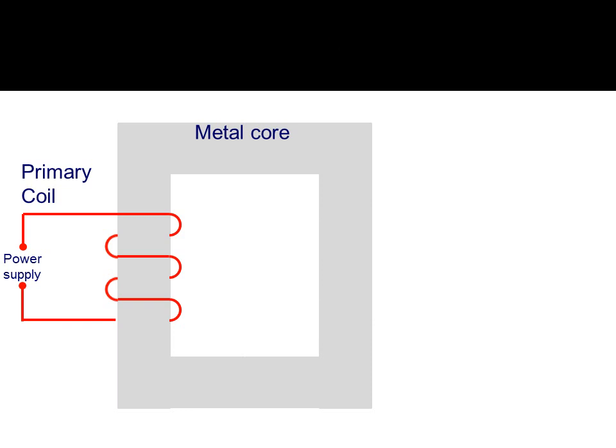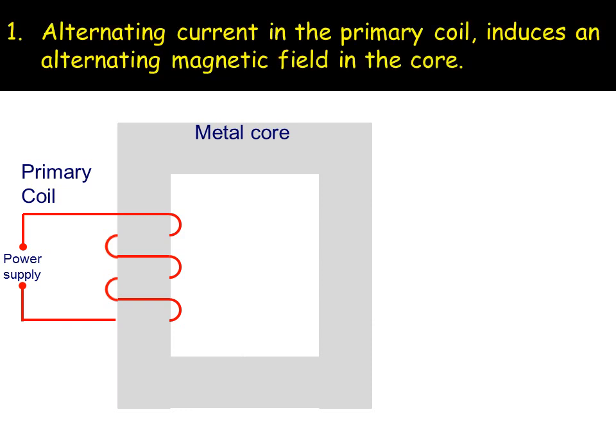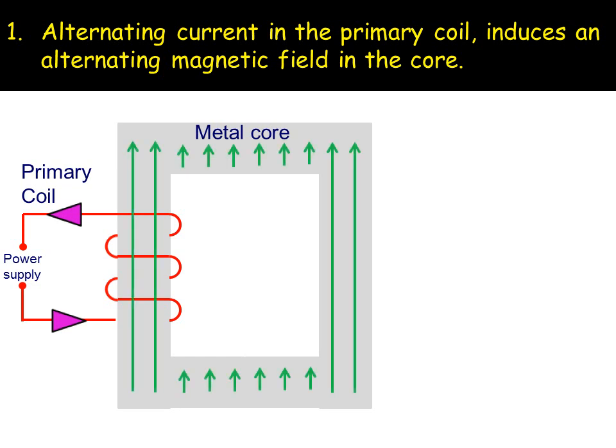We'll just consider the primary coil first of all. An alternating current is put through that coil and that induces an alternating magnetic field in the core, it makes it effectively like an electromagnet. So there's an alternating magnetic field in the core because the current itself is alternating.